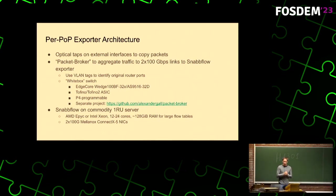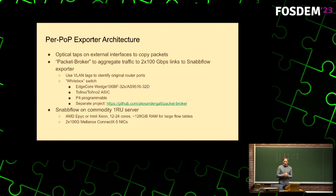The boxes we use are white-box switches based on the Tofino ASIC — the ones that Intel just decided to stop developing, unfortunately. These are very nice boxes: one has 32 100-gig ports for 5,000 euros, and the other has 32 100-gig ports and costs about 20,000 euros. You have to program them yourself when you buy them — they're plain hardware — and you can use the P4 language to do this. I link to another project of mine where I developed a P4 program for that, which is also part of this architecture.